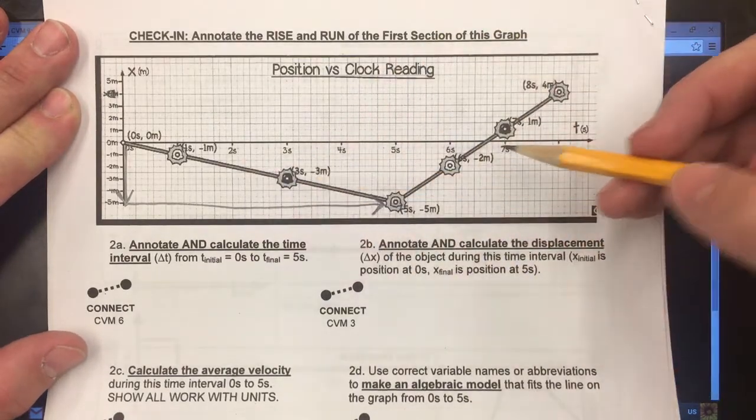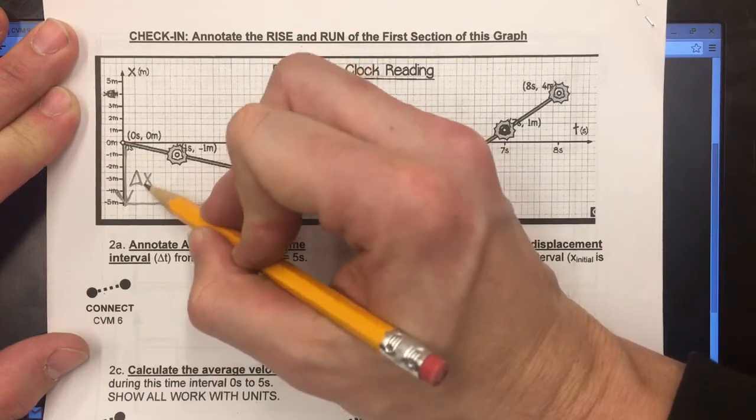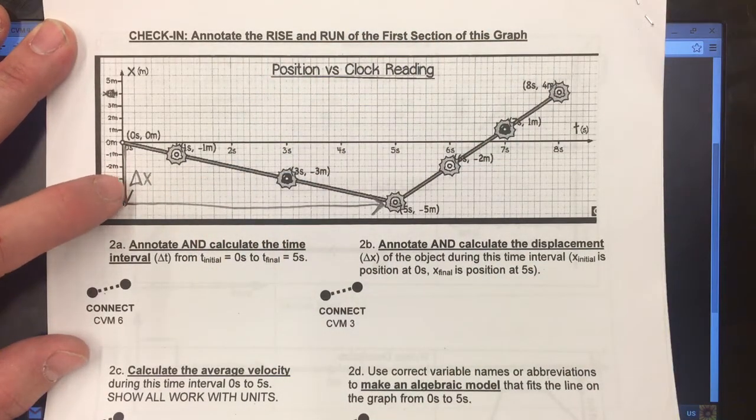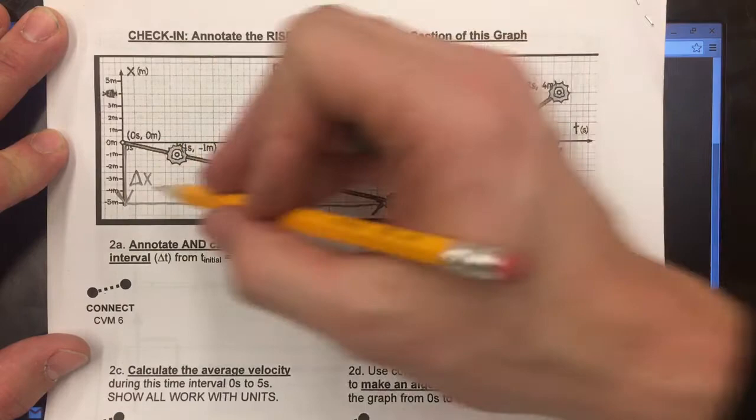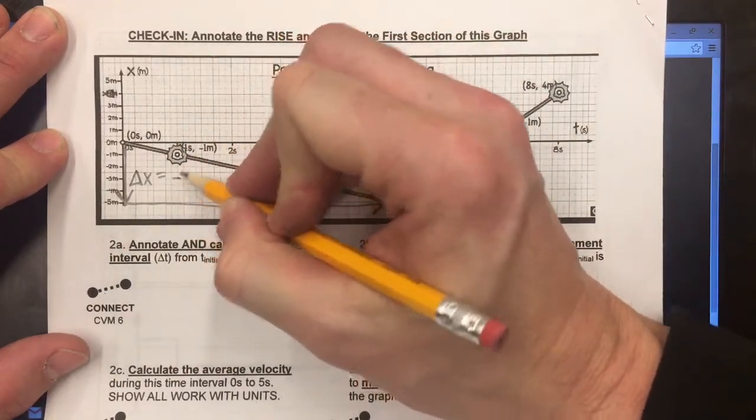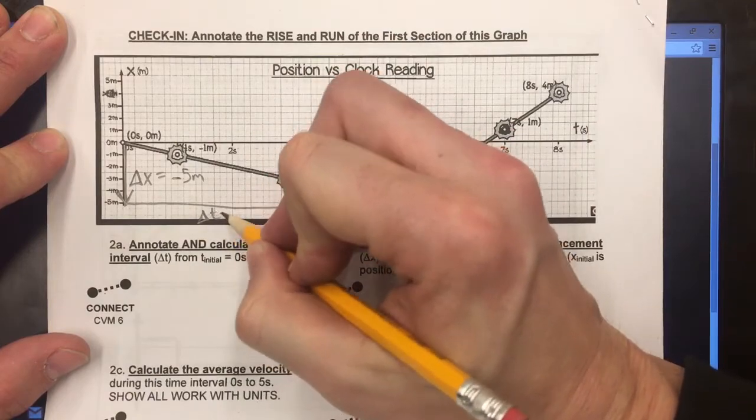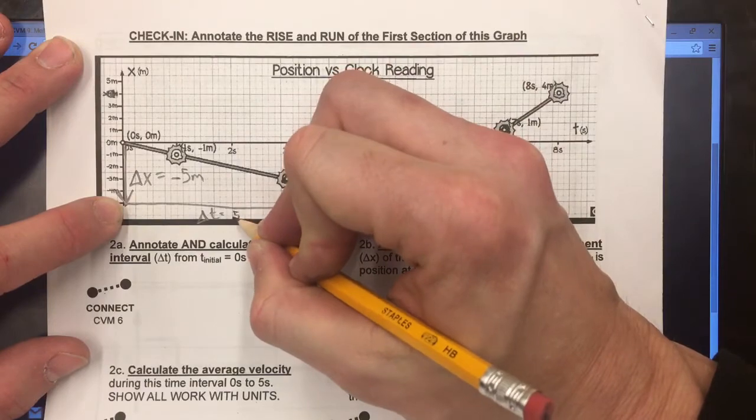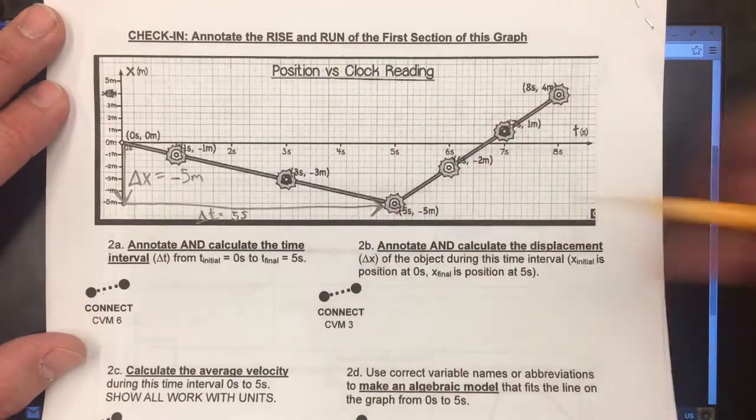We need two sections of this line, and my rise for the graph is the displacement. That is triangle X, change in position means displacement, and this is a rise from zero to five meters which is equal to negative five meters. My run is equal to zero to five seconds. This is going to be the run is equal to a time interval of five seconds. Now that's real straightforward. I can tell that from looking at the graph, but I also want to show that I understand where those calculations come from.